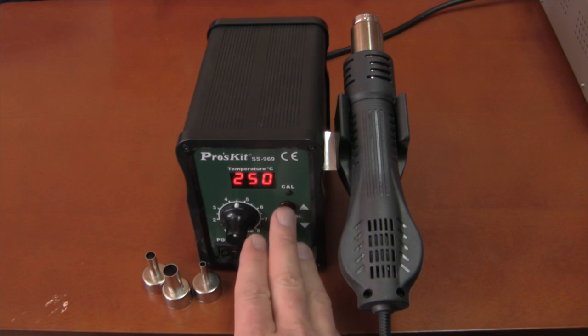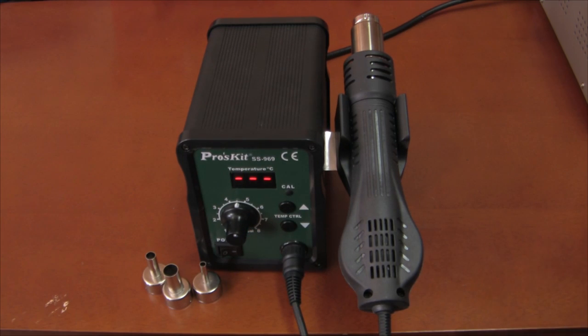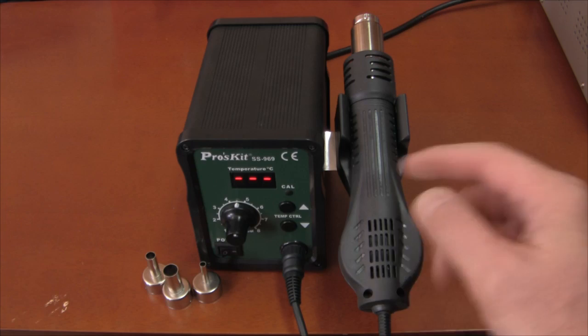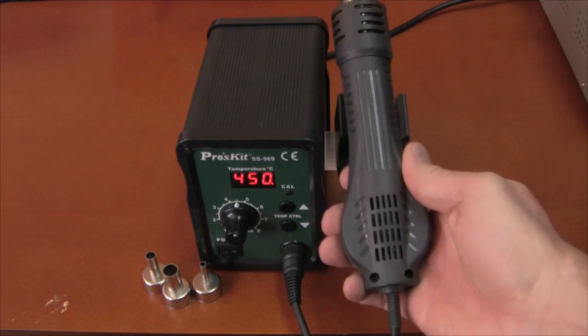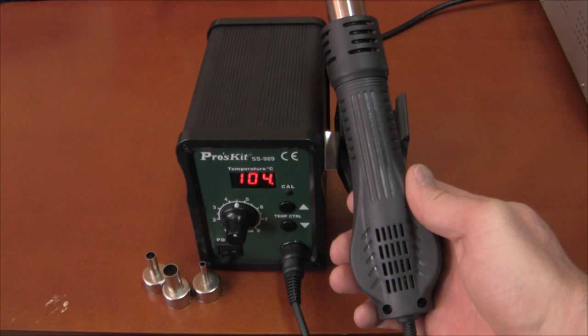So let's set it to 450 degrees, the maximum. Obviously I didn't let it cool down enough. You should always let it cool down before you turn it off. Let it get to this state before you turn it off. Let's take the wand out of the holder.